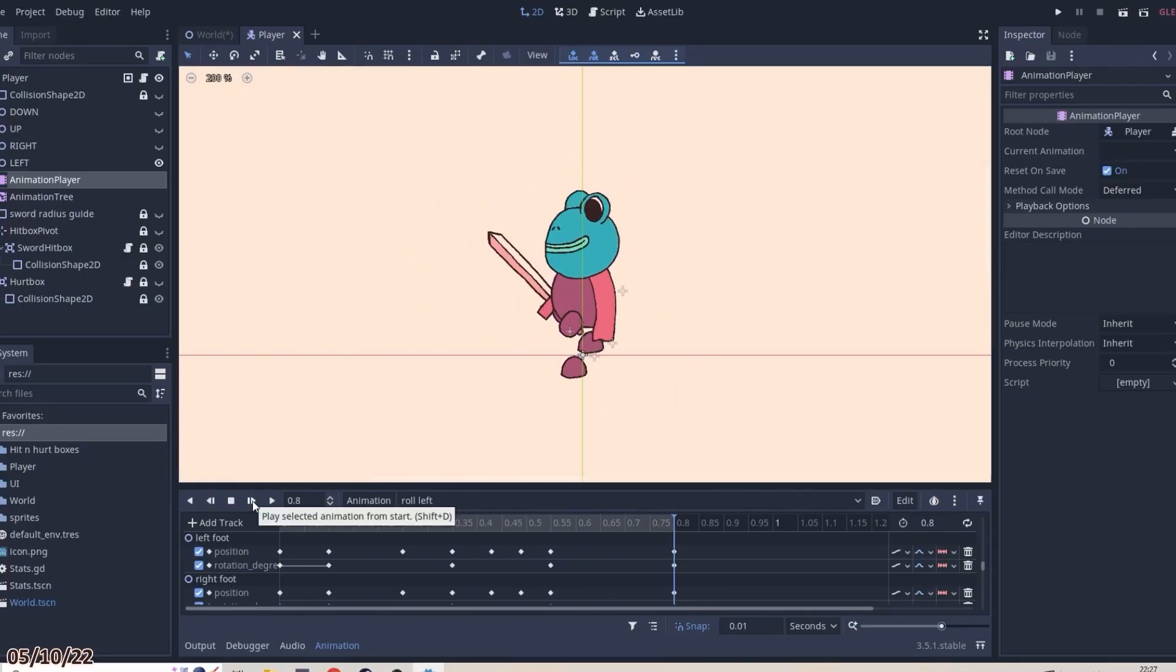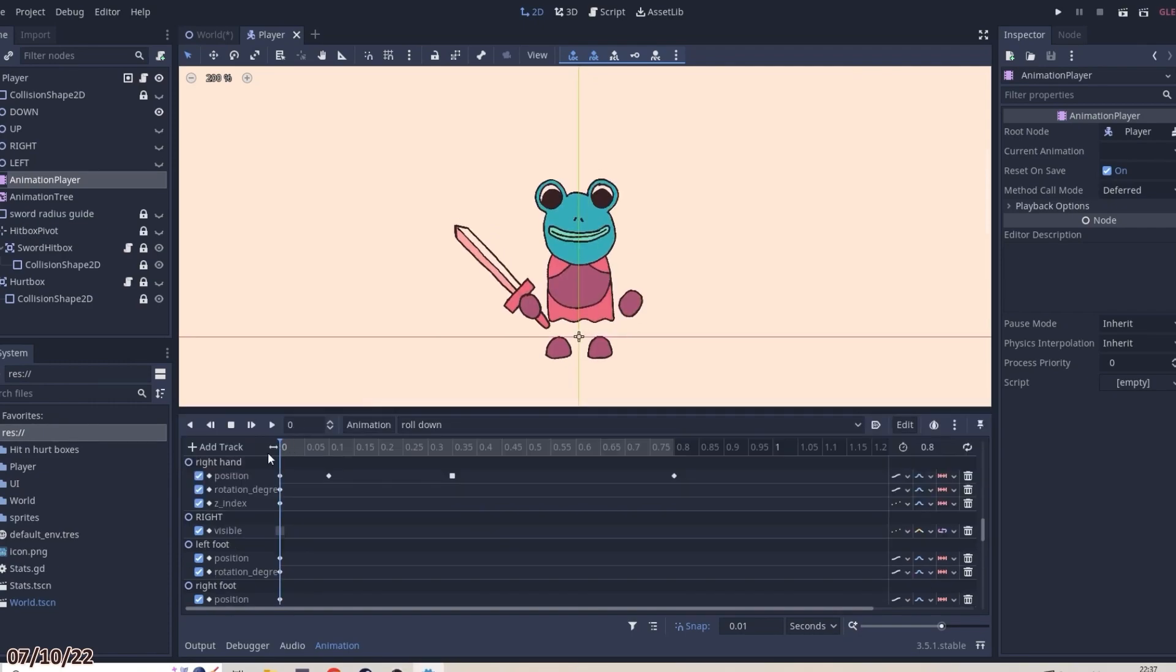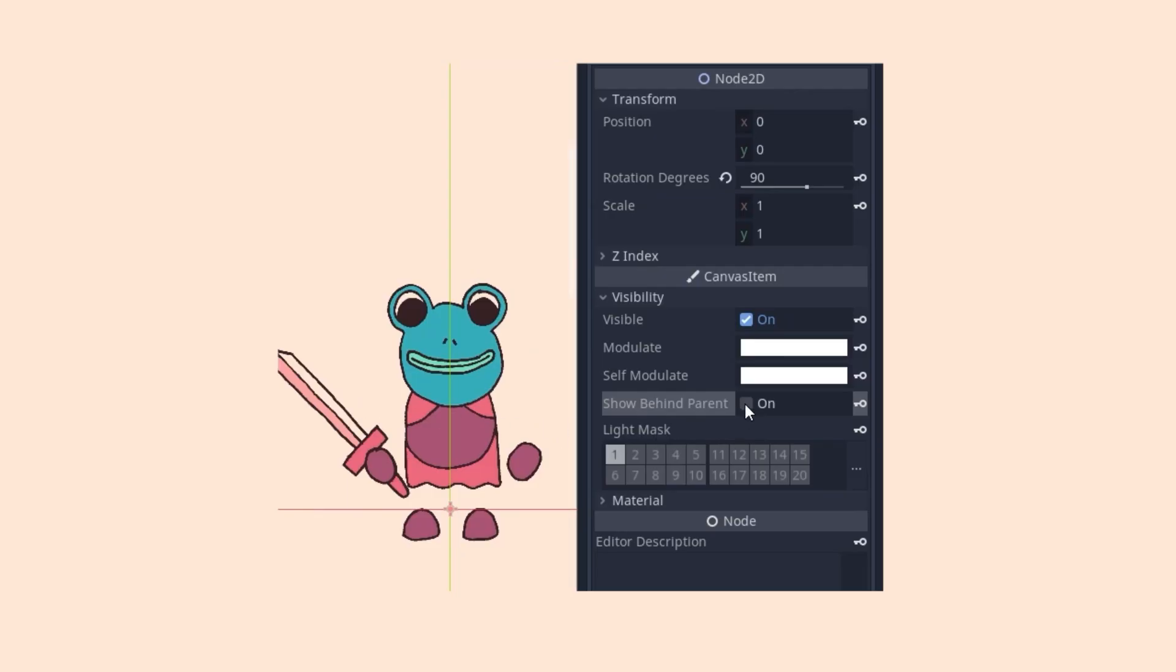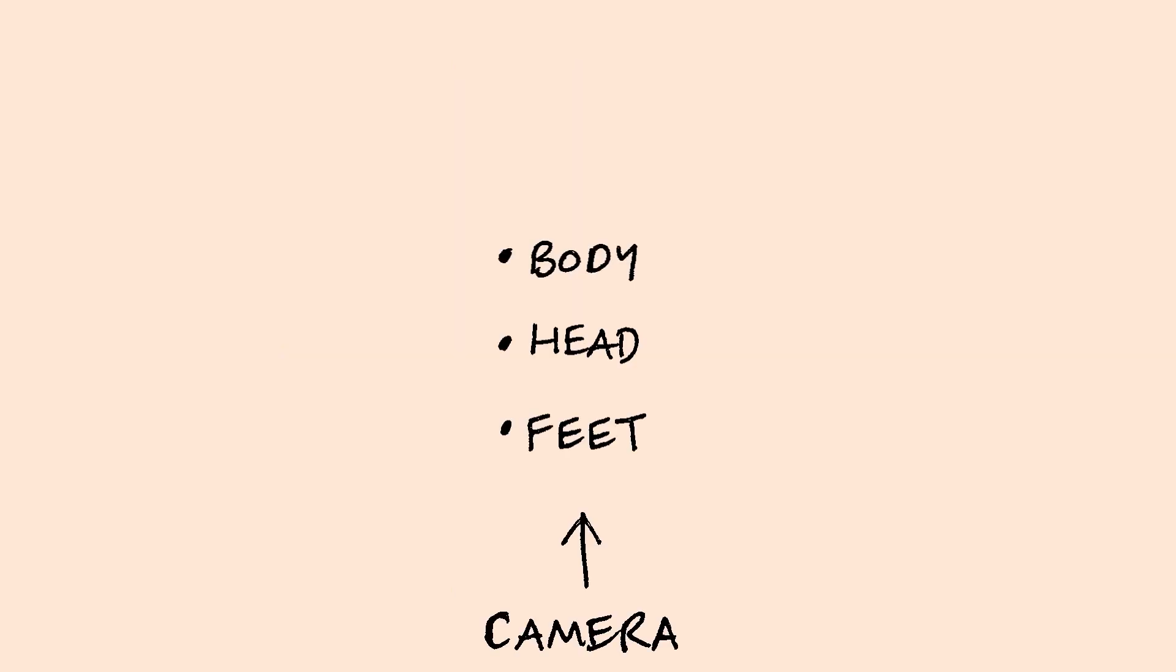I continued working on the roll animations in the other directions. I found rolling up and down particularly tricky, as it involves the order of the feet, body and head reversing depending on how far through the roll you are. For example, in the first half of rolling down, the head is at the front, then during the second half, the feet are. The way I got this working was by using the show behind parent property, which moves the layer to the back. By default I had the feet at the front, but with the show behind property on to move them to the back, and turned it off on the feet, and on on the head to swap them during the animation. And there we have it, rolling in four directions. I think they look a little janky, but I hope you can at least tell what they're supposed to be doing.